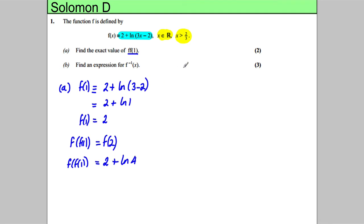Part B - I'm going to work across for the video. Find an expression for the inverse function. There's a set routine for this that helps you do these questions: make y equal to the function, so y equals 2 plus ln(3x - 2). This is a method that works. What you do is swap the roles of x and y.